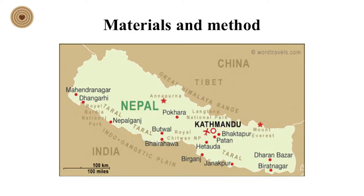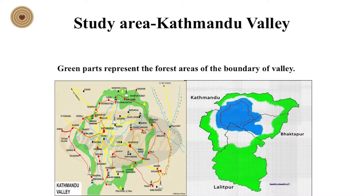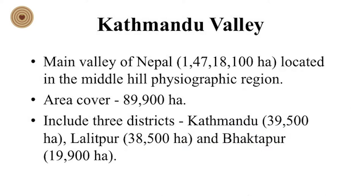For materials and methods, this is our country. My specific study site is Kathmandu Valley, which is the capital of Nepal. It has a bowl-shaped structure, and the green parts represent the forest at the boundary of the valley. The area covers 89,900 hectares and includes three districts: Kathmandu, Lalitpur and Bhaktapur, with 39,500 hectares, 38,500 hectares and 19,900 hectares respectively.